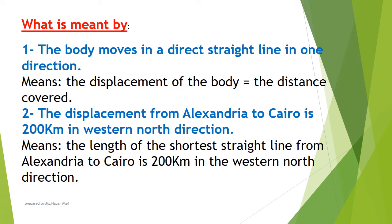What's meant by the displacement from Alexandria to Cairo is 200 kilometers in western north direction? It means the length of the shortest straight line from Alexandria to Cairo is 200 kilometers in the western north direction.